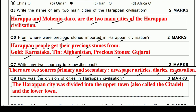Question 8: How was the division of cities in Harappan civilization? The Harappan city was divided into the upper town, also called the citadel, and the lower town.